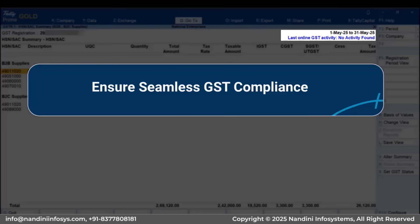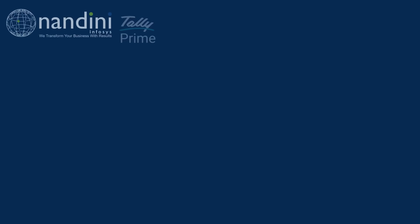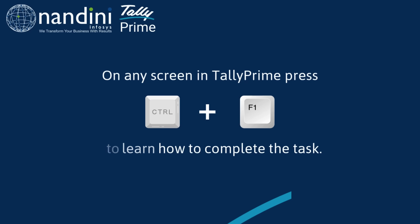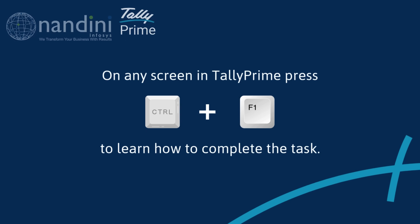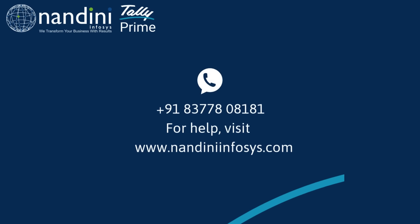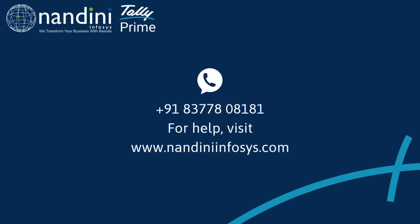Now that you know how to enable and view the HSN summary breakup in TallyPrime Release 6.0 and later versions, you can ensure seamless GST compliance. On any screen in TallyPrime, press Ctrl+F1 to learn how to complete the task. You can also WhatsApp us for assistance.